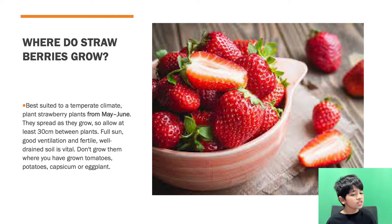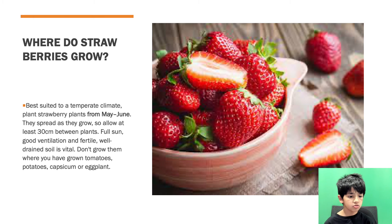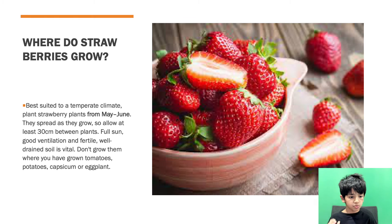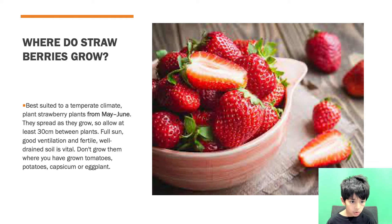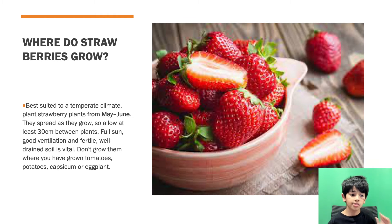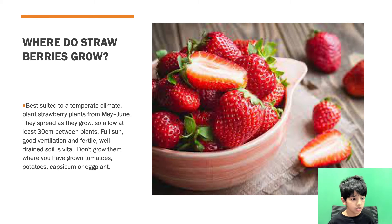Strawberries are best suited in a temperate climate. Plant strawberries from May to June. They spread as they grow, so allow at least 30 cm between each plant. They need full sun and good conditions.